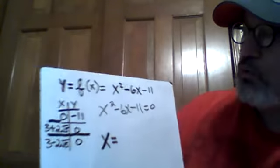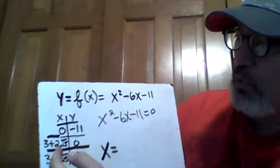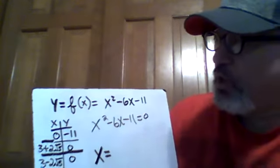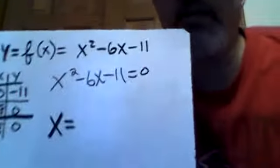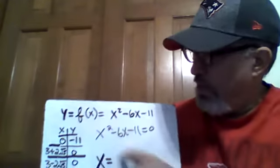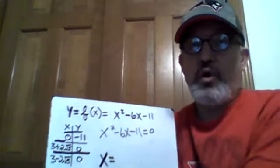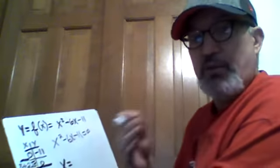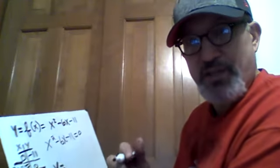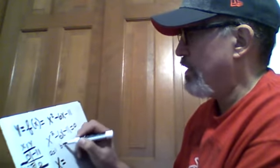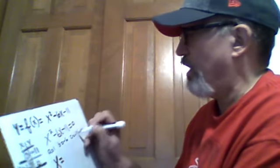I've taken the two roots — three plus two times the square root of five and three minus two times the square root of five — and put them on our t-table to indicate that they are the x-intercepts of the graph of the function. Now we're going to solve the same quadratic equation using the quadratic formula. Plugging in: the opposite of b plus or minus the square root of b squared minus 4ac, all over 2a. Here a is 1, b is negative 6, and c is negative 11.